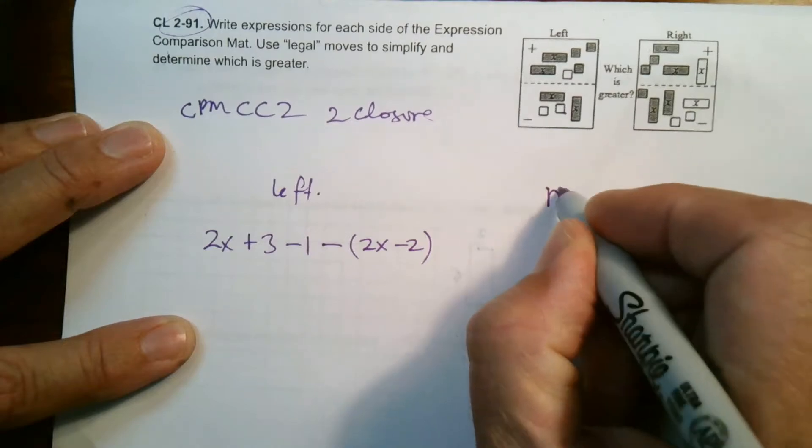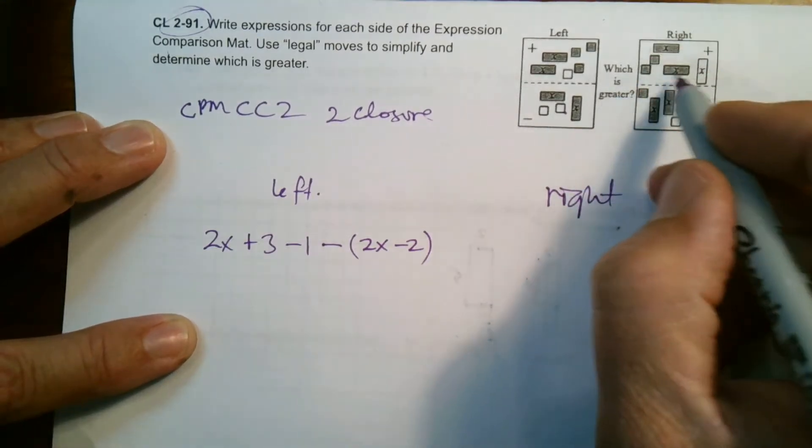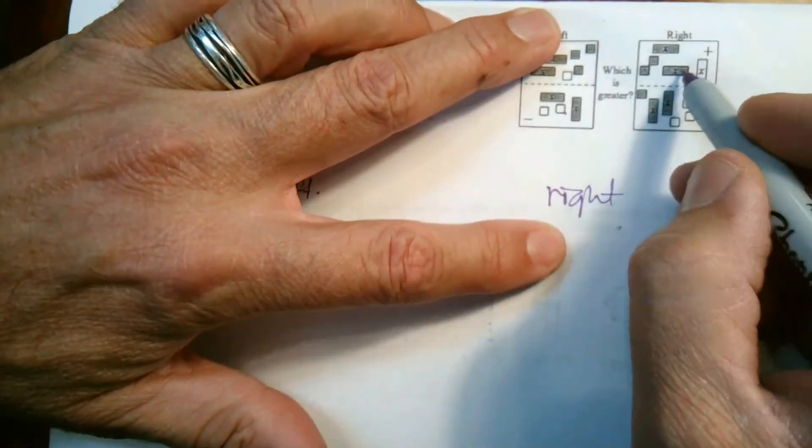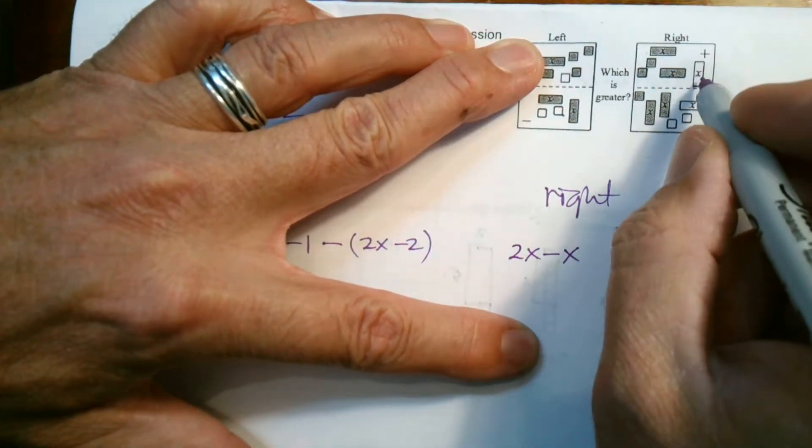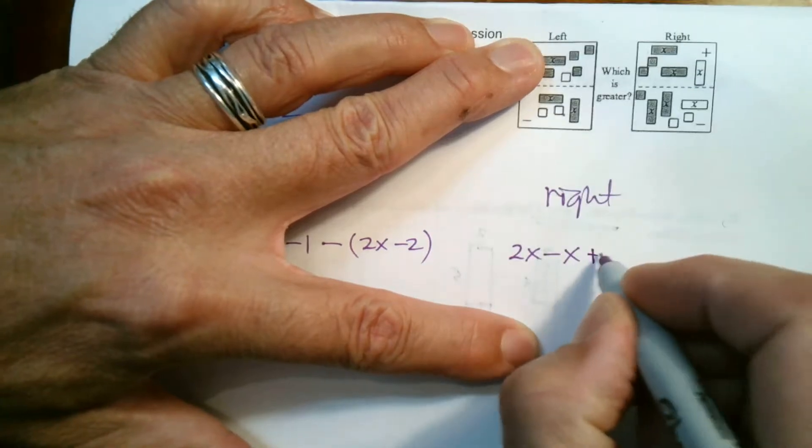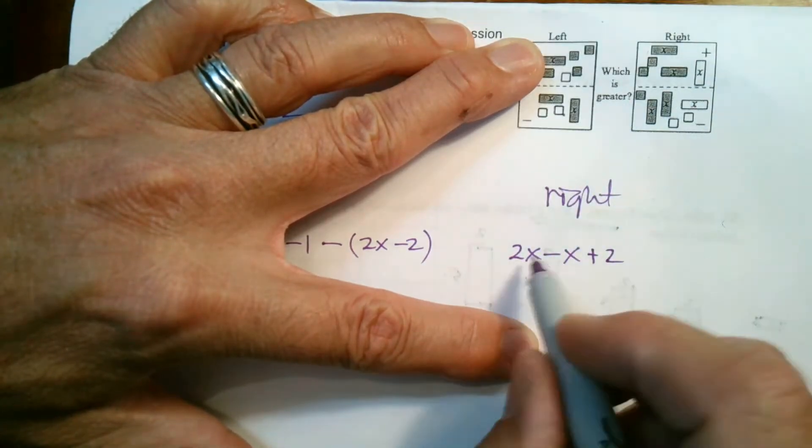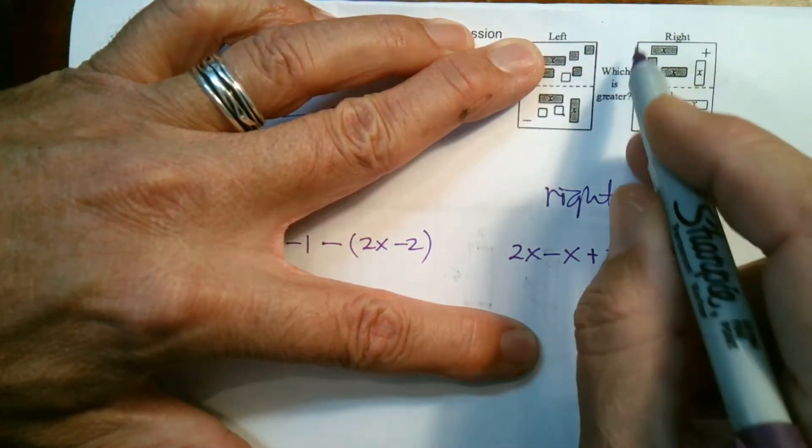On the right side, let's write what we have. In this case, I have two positive x's, and then I have a negative x, so I'm going to write minus x, and then I have two positive ones, plus two. So that's the expression for the top part of the mat.